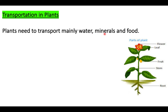Water and minerals are absorbed from the soil by the roots, and food is prepared in the leaves of the plant during the process of photosynthesis. The transport of water and minerals is unidirectional — from the lower part to the upper part of the plant, meaning downward to upward, which is why we call it unidirectional.